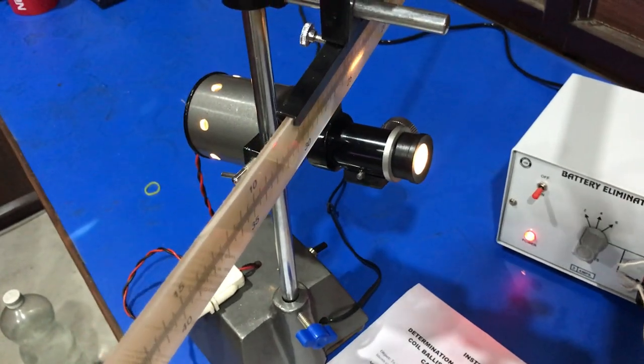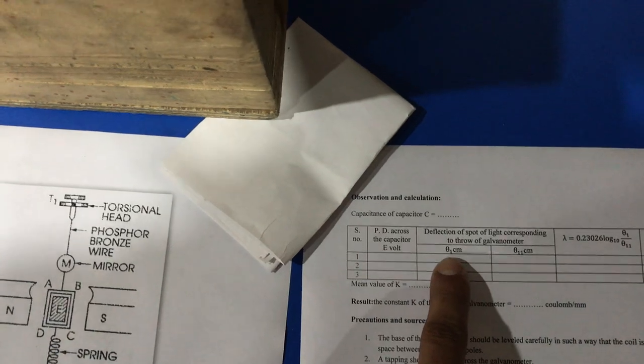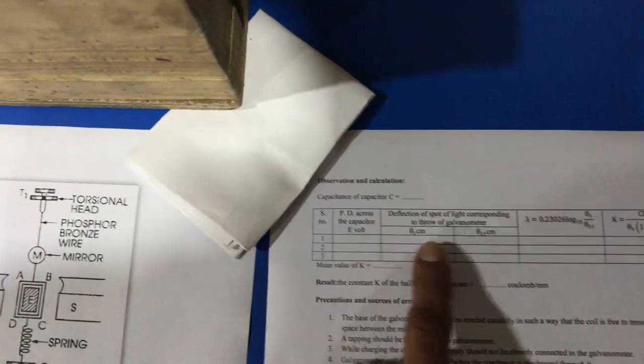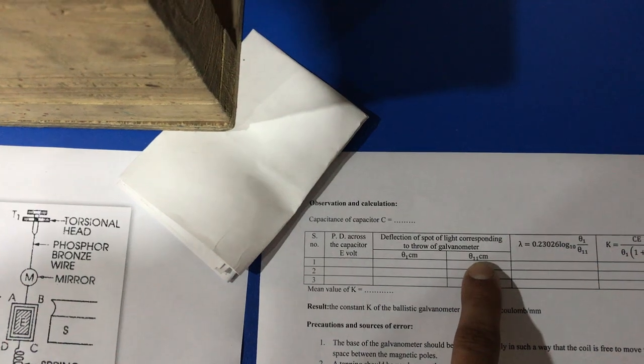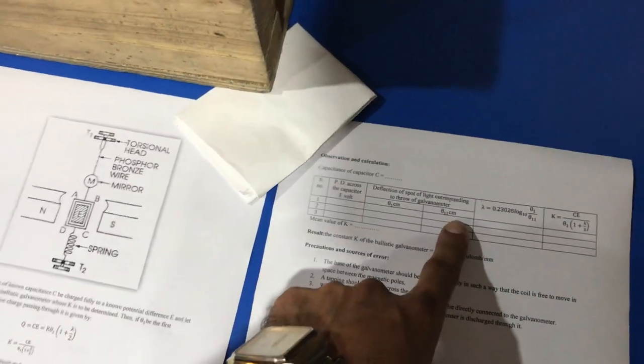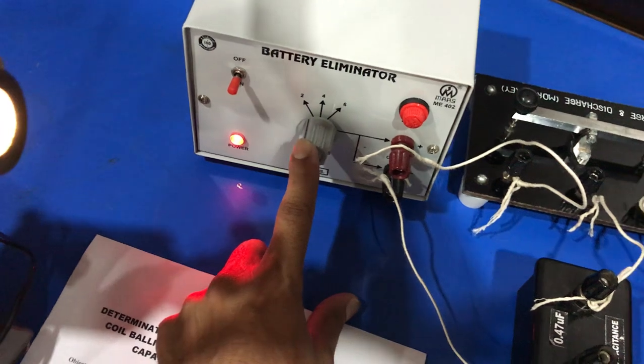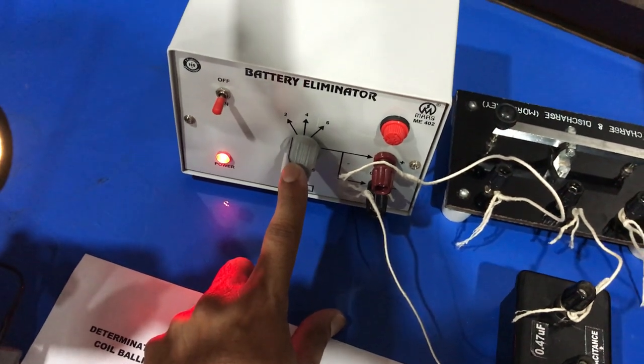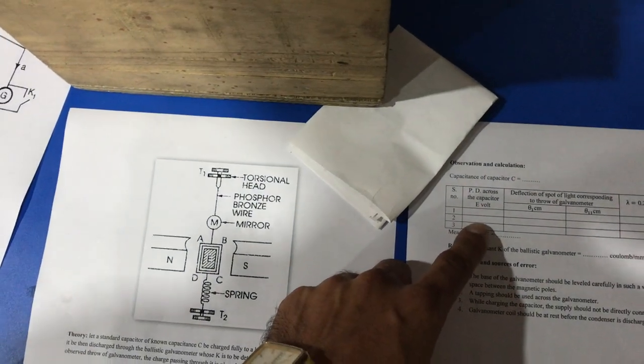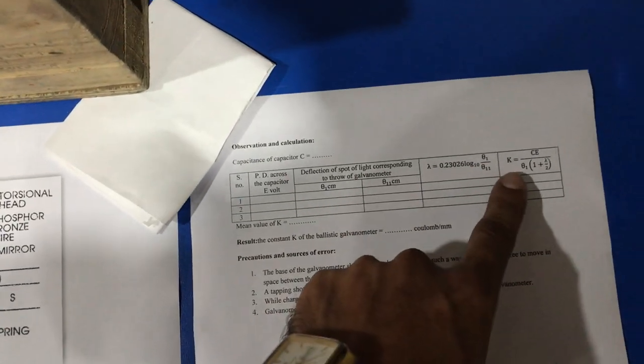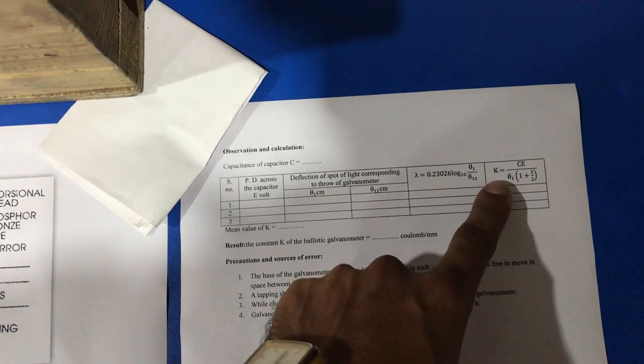We note the first throw deflection and the 11th throw deflection, and we also note down the value of the voltage applied. Now we repeat this process for other values of voltage, 4 and 6, and calculate the value of ballistic constant K.